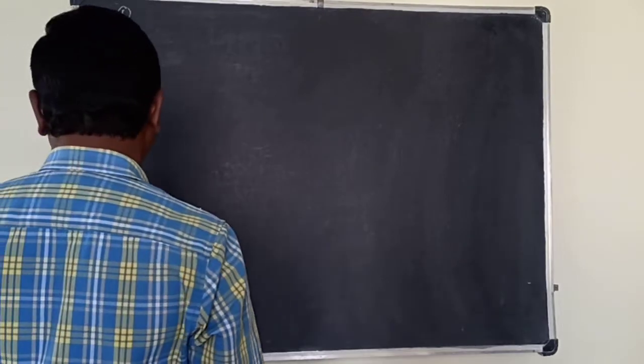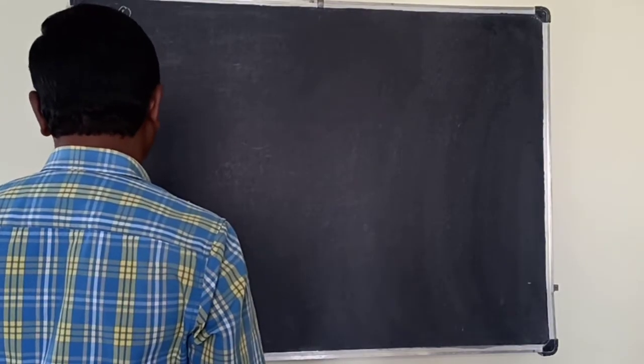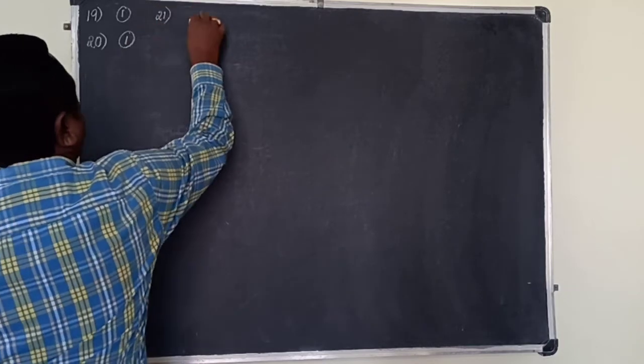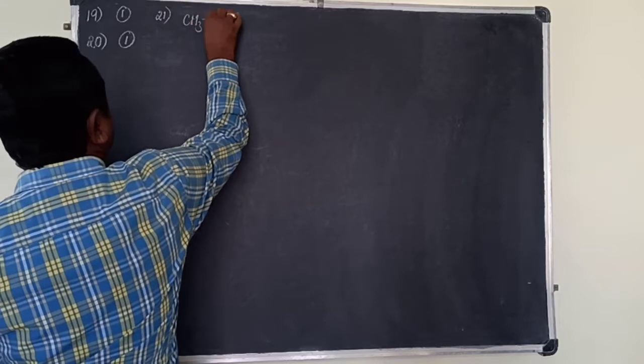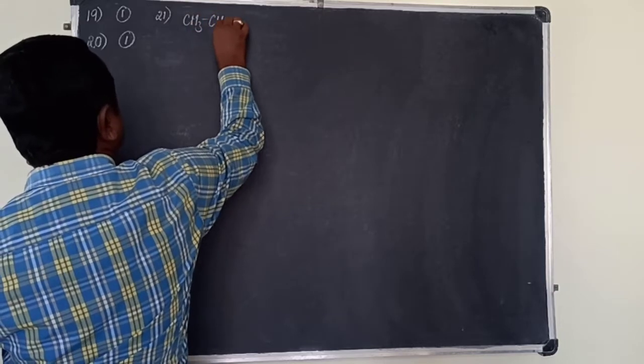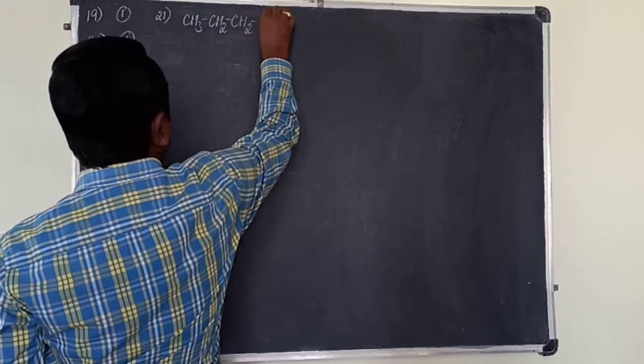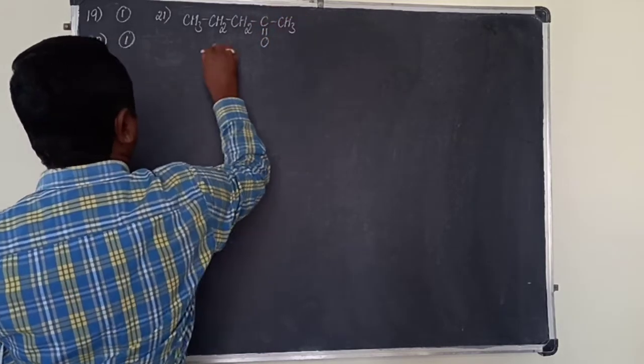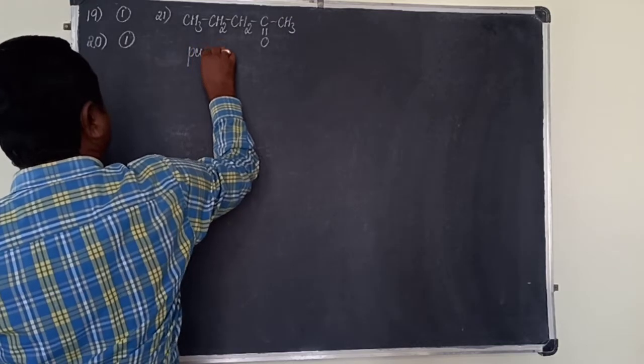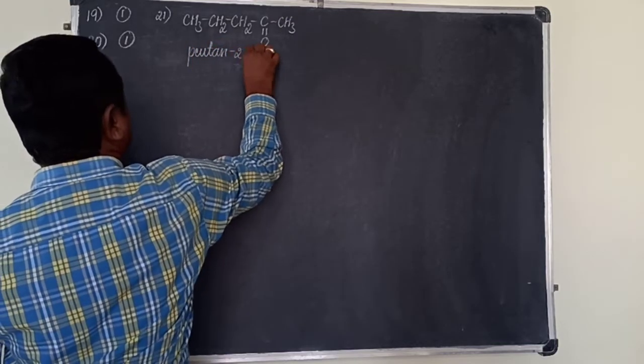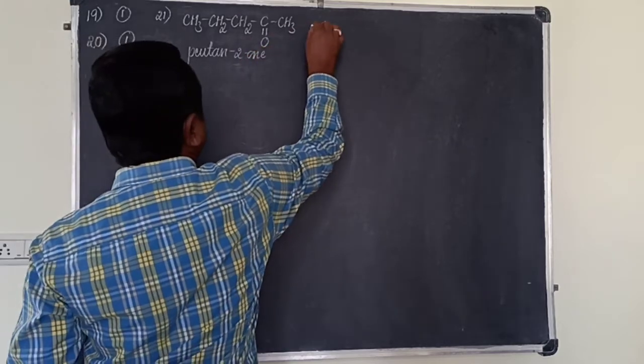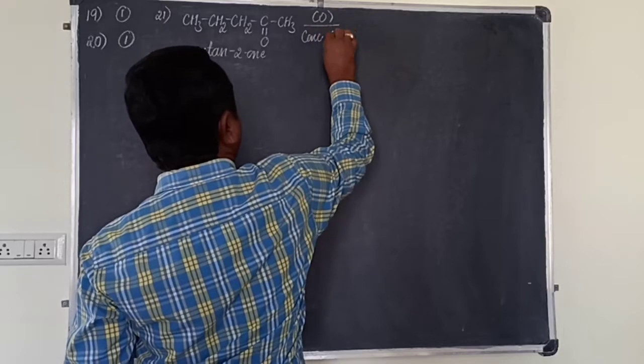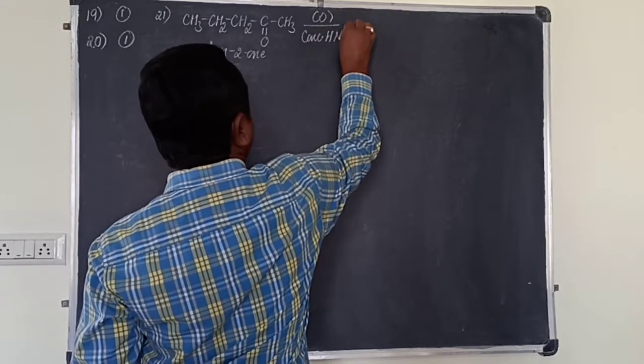Next, 21. When pentane-2-one is oxidized using concentrated HNO3. Pentane-2-one: CH3-CH2-CH2-CO-CH3. This is called 2-pentanone, pentane-2-one. It is oxidized using concentrated HNO3.